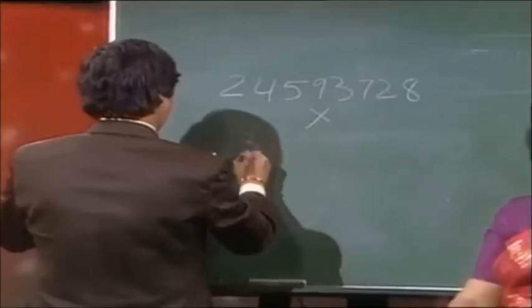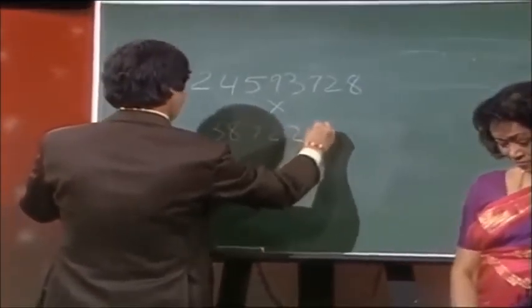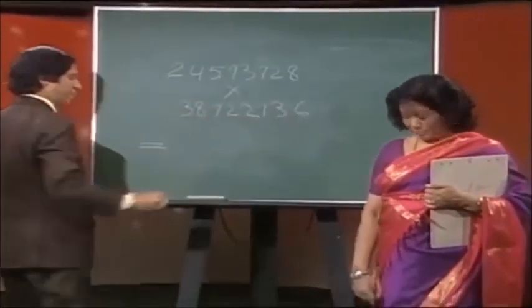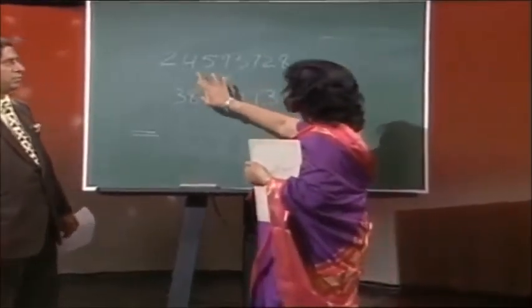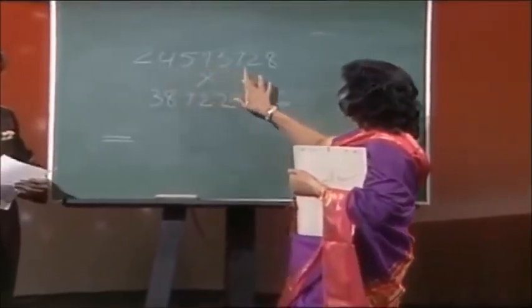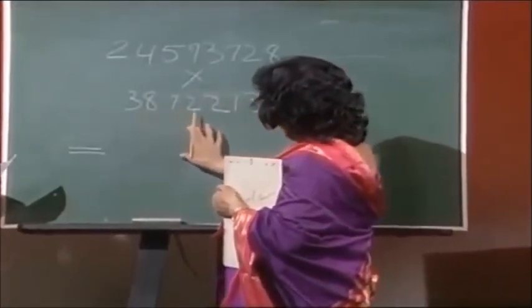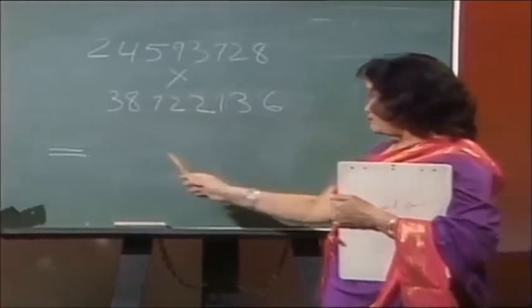Okay, now the question is 24593728 multiplied by 38722136. Now tell me, do you want me to give you the answer from this side to this side or this side to this side?